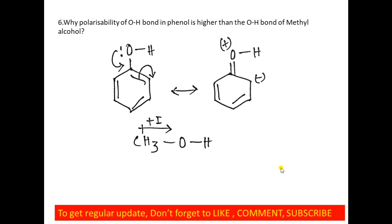The sixth question: why is the polarizability of the O–H bond in phenol higher than the O–H bond of methanol? In phenol, resonance occurs with the benzene ring, causing the oxygen atom to become positively charged, which delocalizes electron density away from the O–H bond, making it more polarizable. In methanol, due to the +I (inductive) effect of the CH3 group, electron density of the O–H bond shifts toward the hydrogen atom, making it less polarizable, as charges are localized on the oxygen atom. That is why the polarizability of the O–H bond in phenol is higher than in methanol.